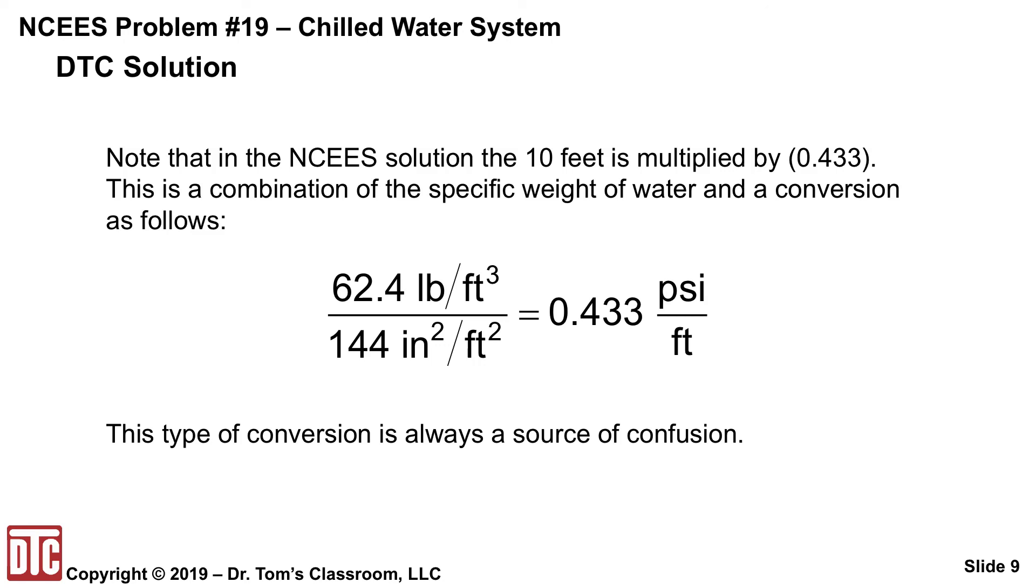Well, again, it's just combining what I say is two basic conversions. And that will always cause a problem with participants. So that's where that comes from. So that's where they multiply by 10 and get the 4.33.